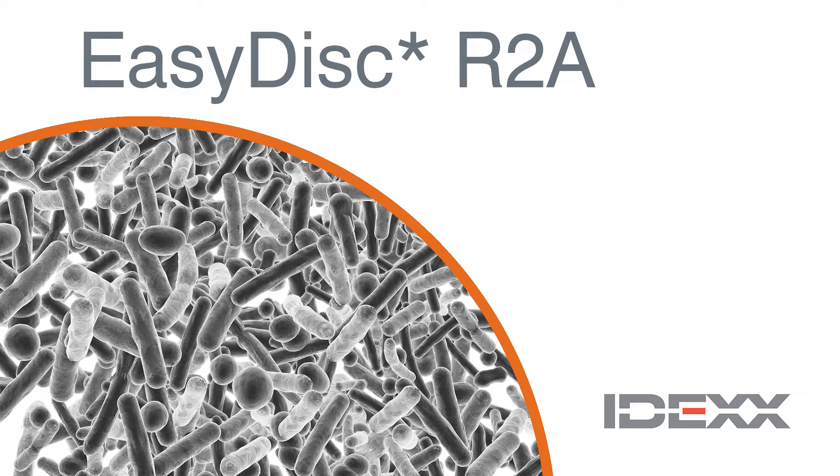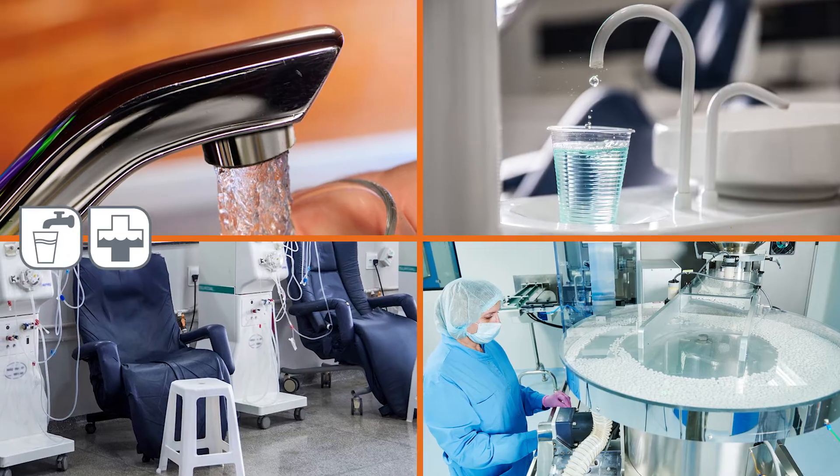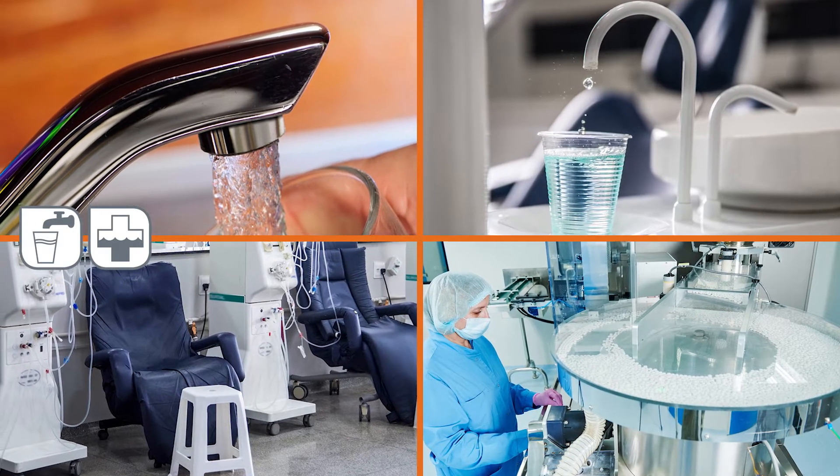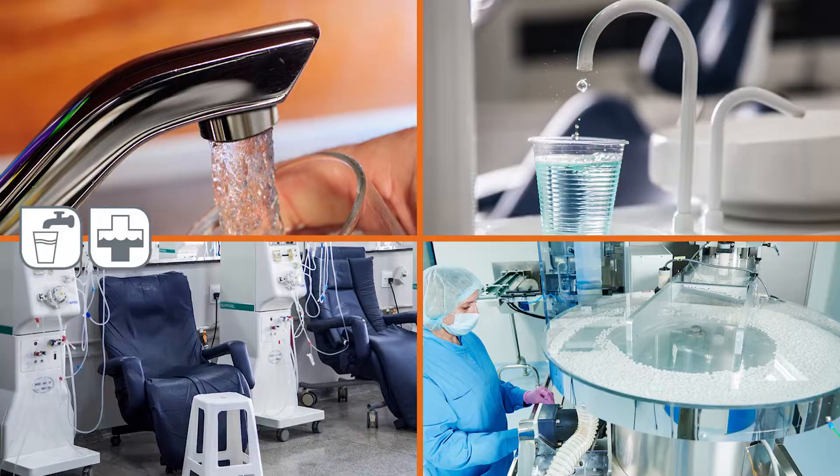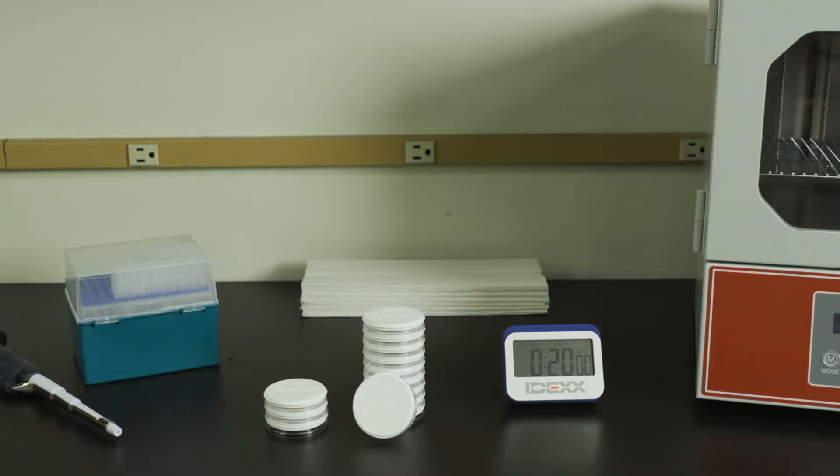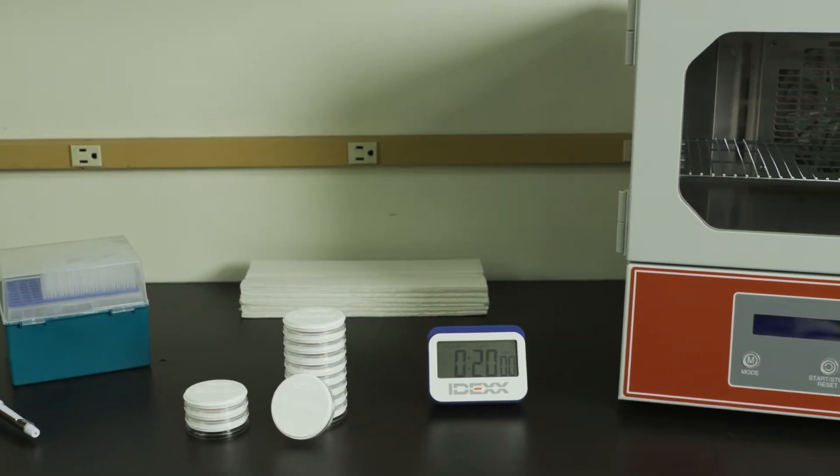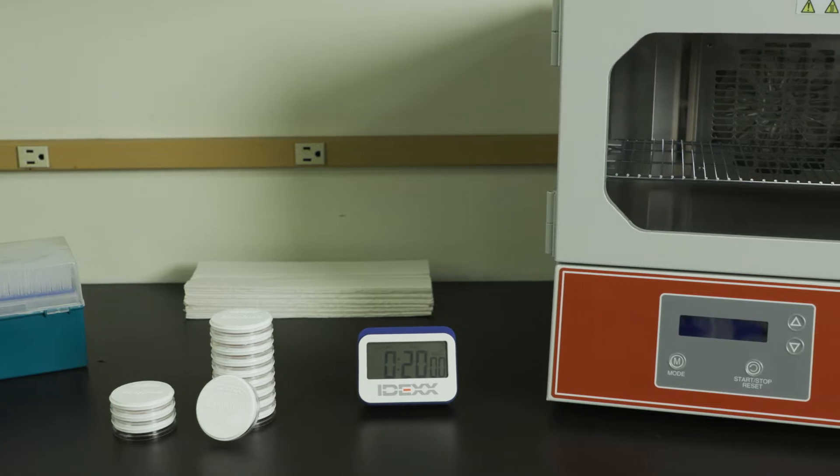The EasyDisc R2A test quantifies total heterotrophic bacteria in water samples in five to seven days with no confirmation steps. In the next few minutes, you will learn how to use the EasyDisc R2A test with a 1 mL water sample.